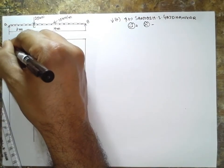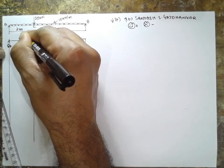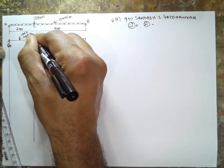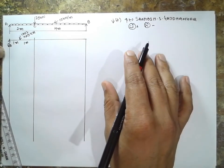This is RA and this value will be 10, 10 into 2, it becomes 20 kilonewton, 1 meter this side, 1 meter this side, it is UDL.